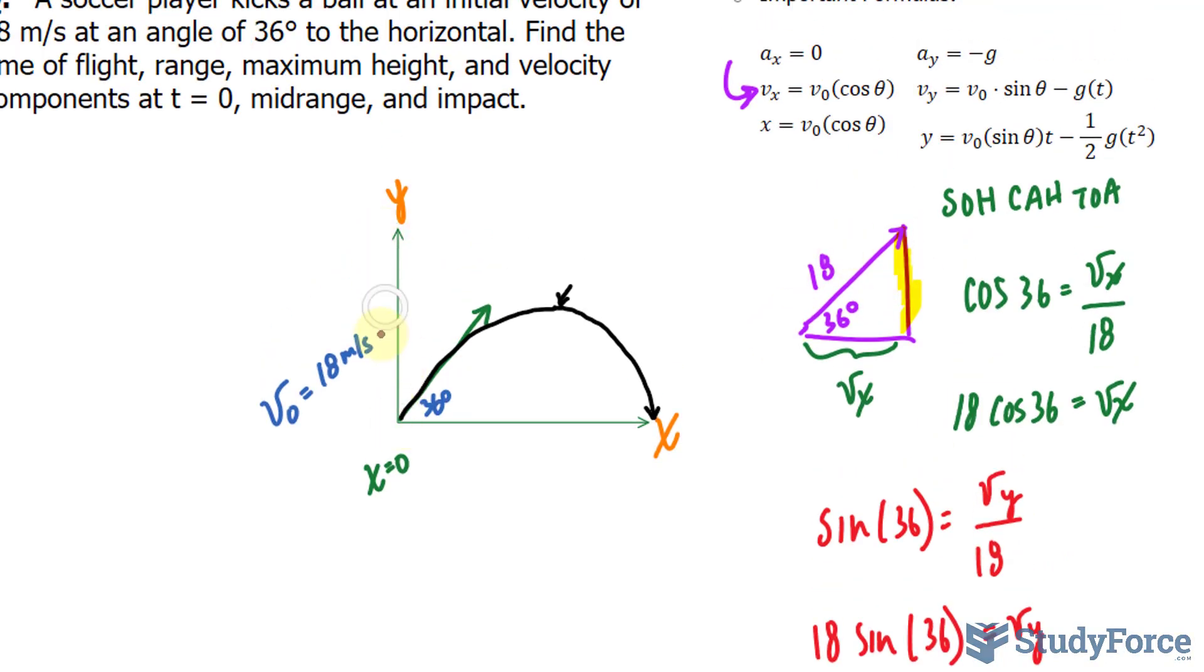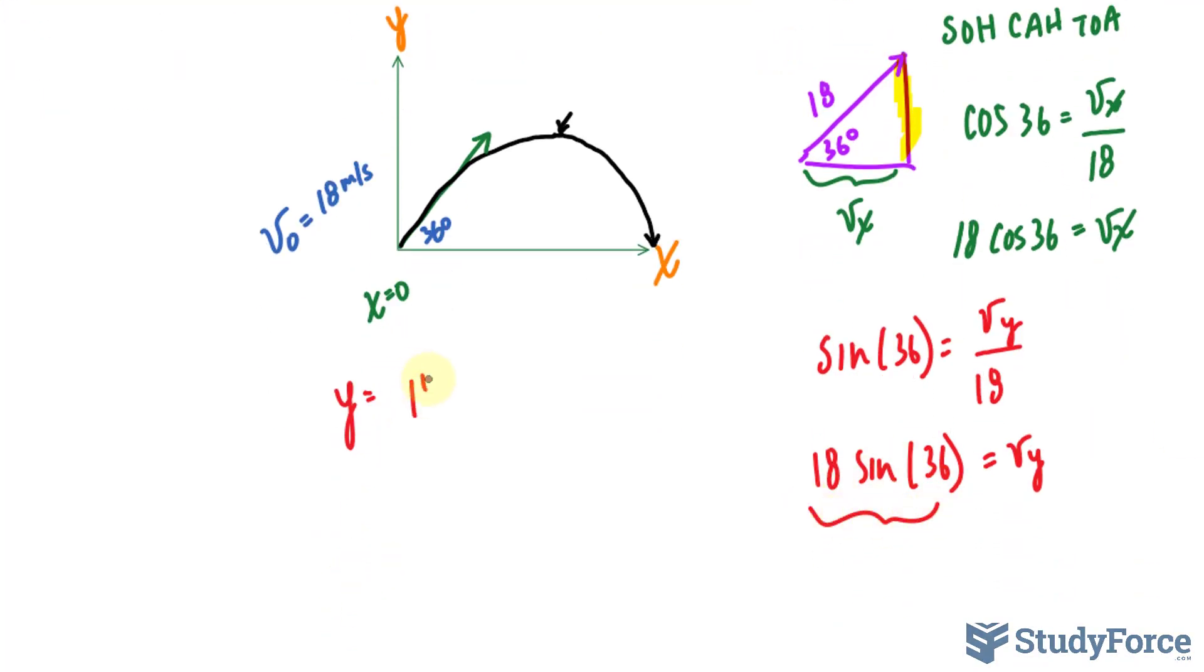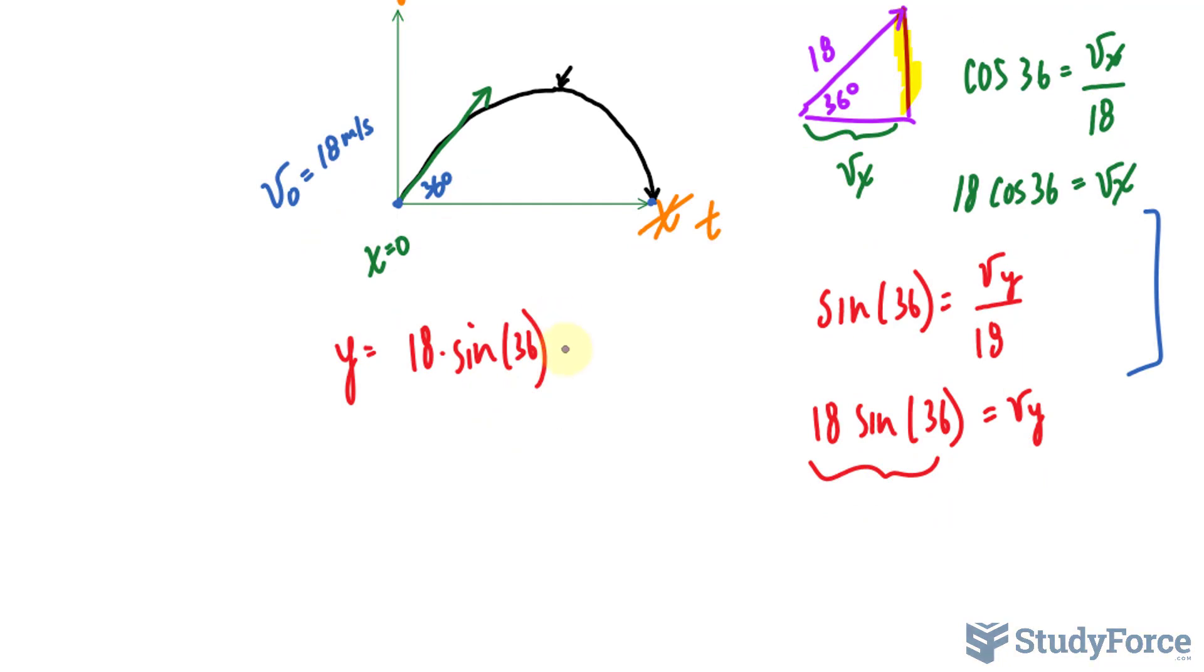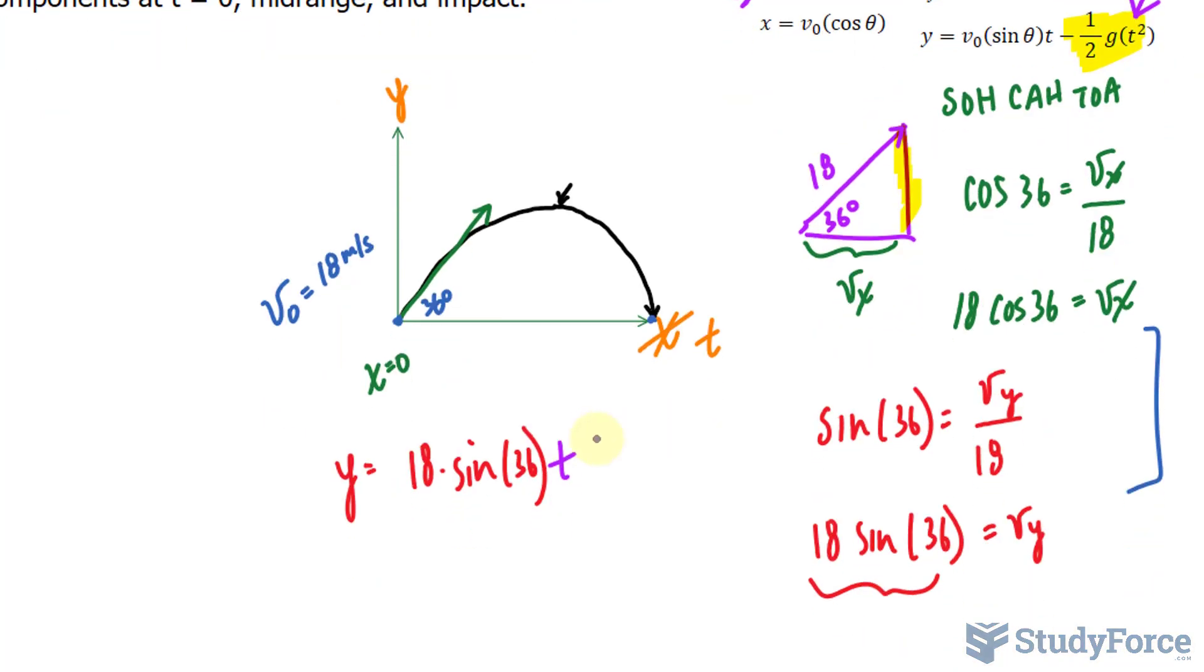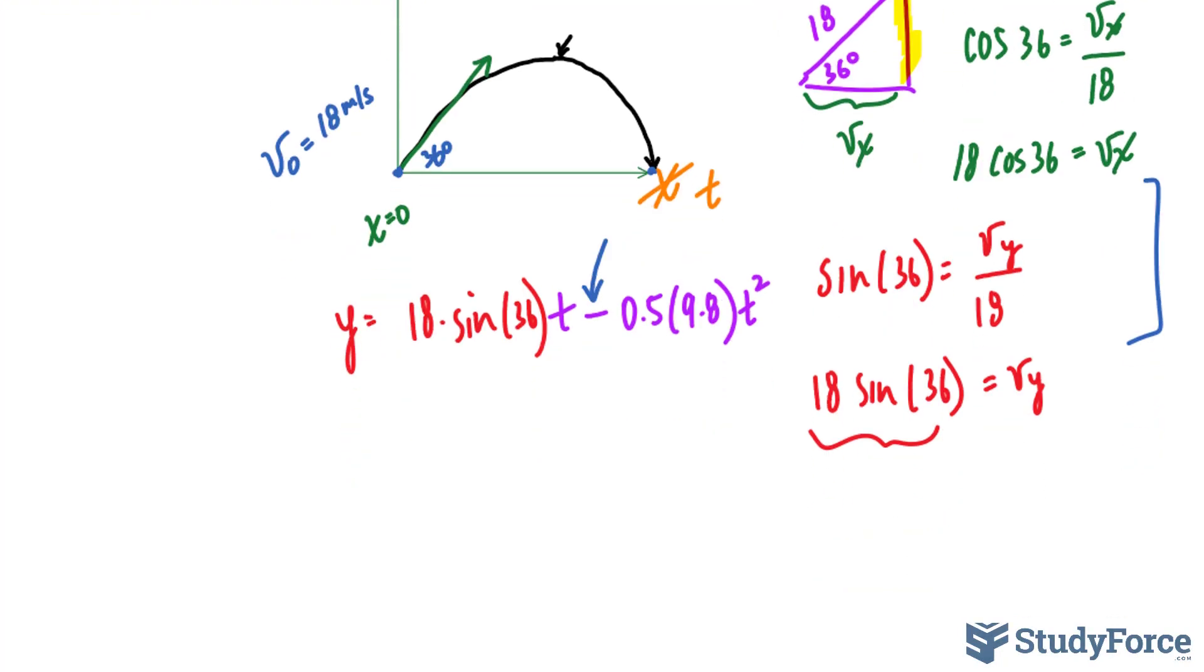Now what's interesting about the y component, and specifically the equation that represents the distance from the horizontal y, is that y can be calculated by taking this, which is 18 times sin(36), multiplying it by the time, and then taking into account that there is a force of gravity pulling the ball down, we then subtract it by this expression: -0.5 times the acceleration due to gravity, which is 9.8 times t². The reason why this is negative is because the acceleration due to gravity is actually decelerating the velocity along the y axis.